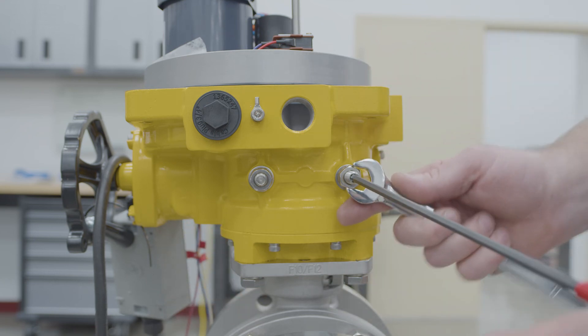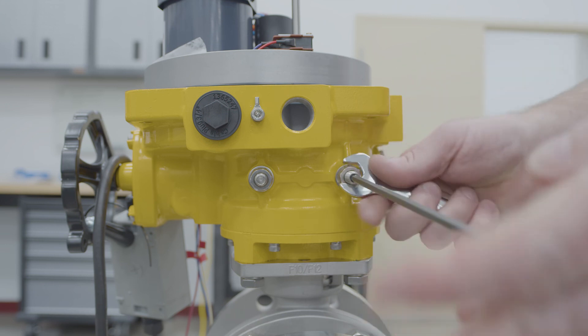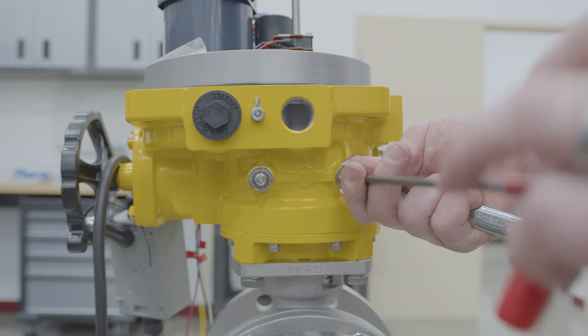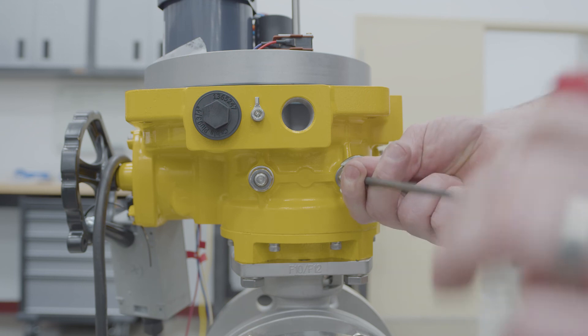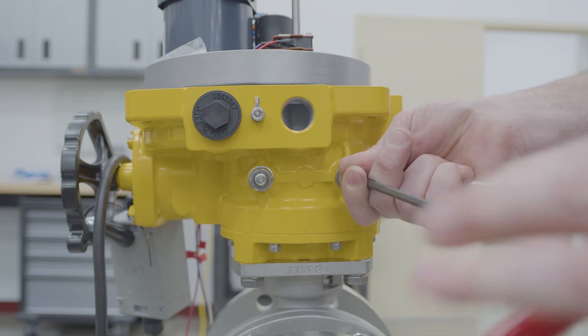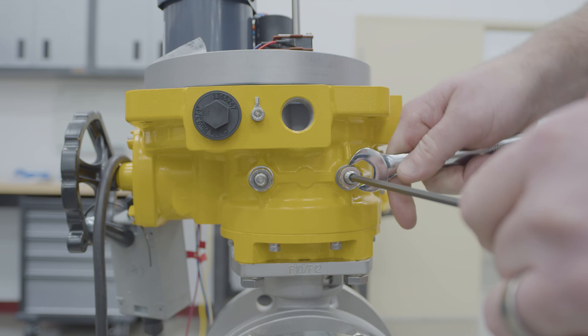All right, so now the valve's in the closed position. Now you're going to adjust the stop bolt in the same way. You're going to run it all the way until it touches. And then you're going to back it off about two and a half turns. And then you're going to lock it down.